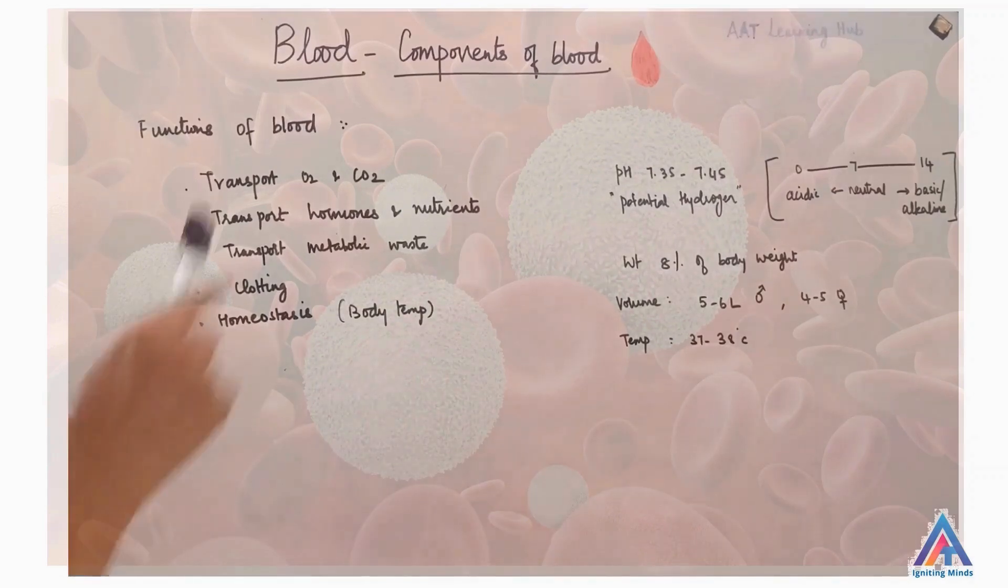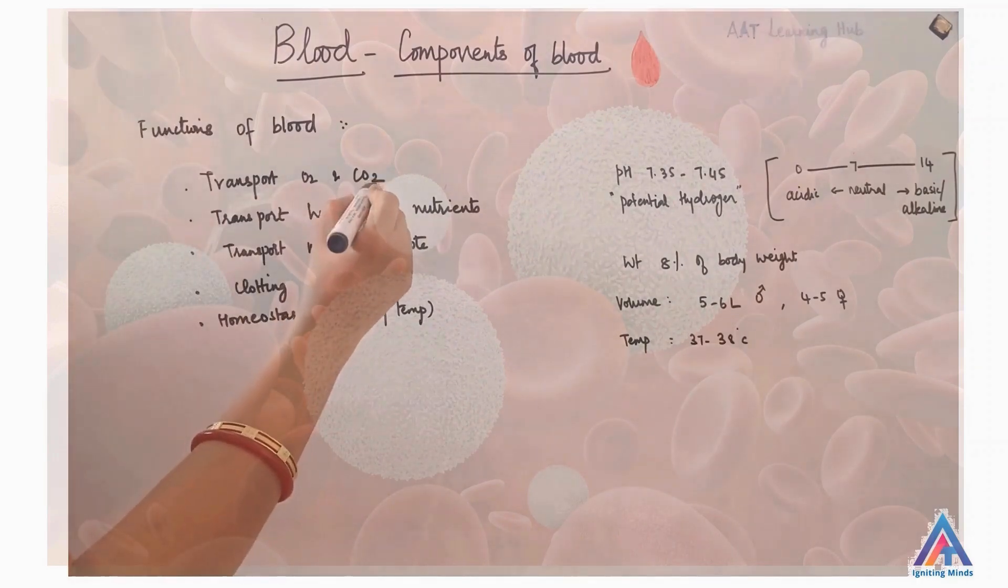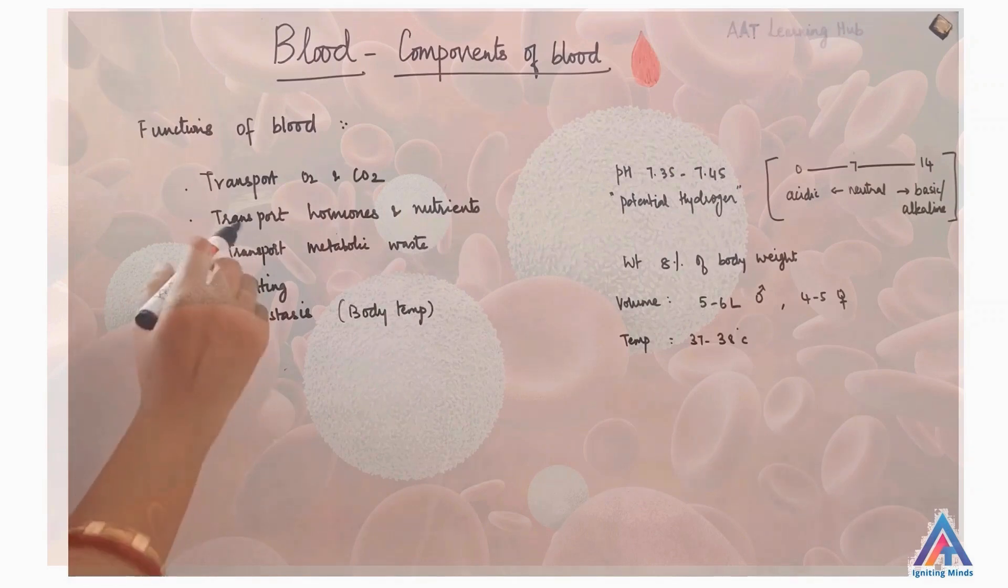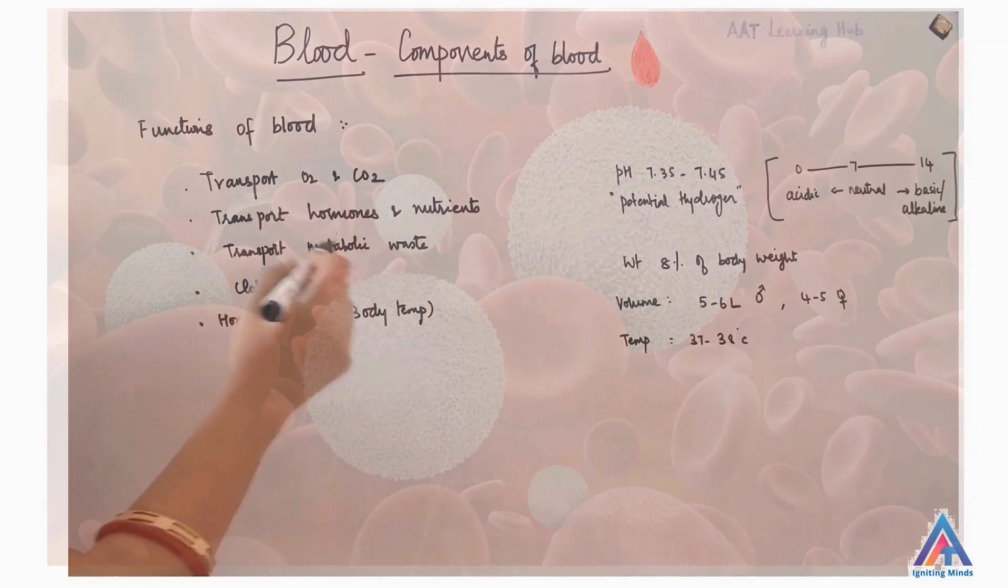Now, functions of blood as a whole. They help in transport of oxygen to the body and carbon dioxide away from the body. They help in transport of hormones and nutrients. They help in transport of metabolic waste. Help in clotting. And they also help in homeostasis.